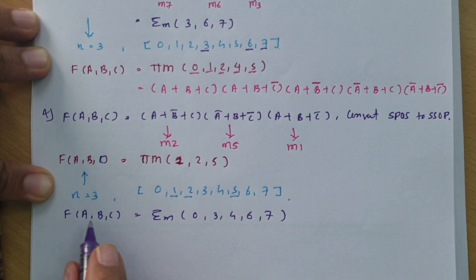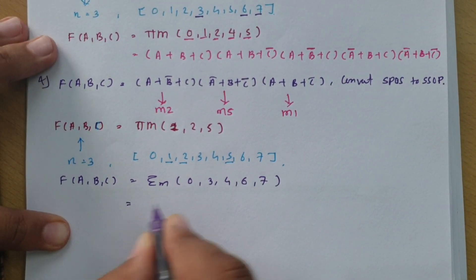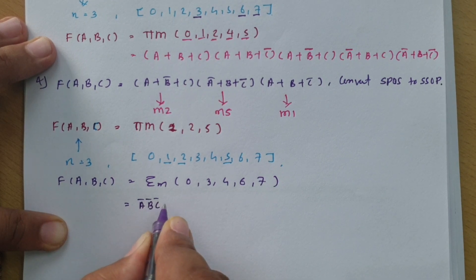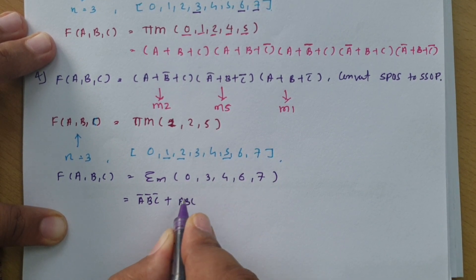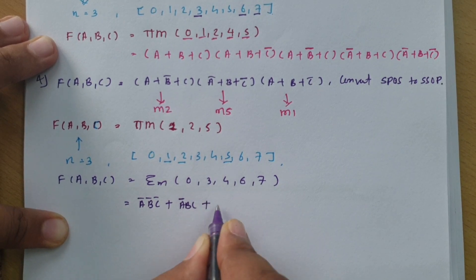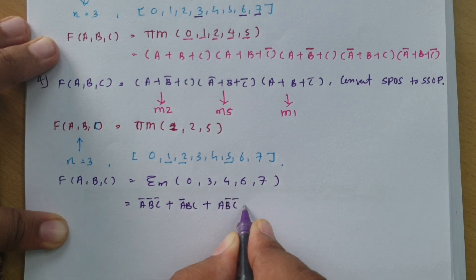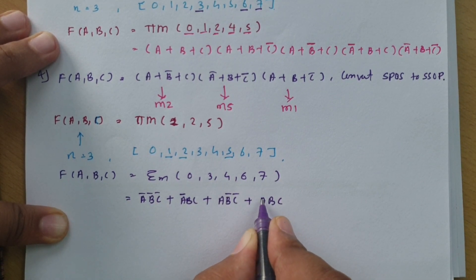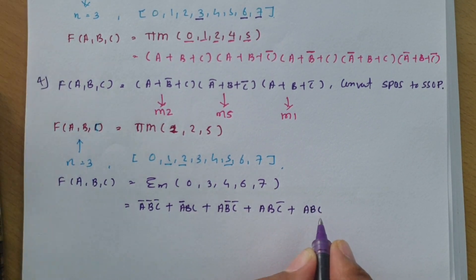Writing this in variable form: for minterm 0 (0,0,0) — A bar B bar C bar. For minterm 3 (0,1,1) — A bar B C. For minterm 4 (1,0,0) — A B bar C bar. For minterm 6 (1,1,0) — A B C bar. For minterm 7 (1,1,1) — A B C. That is how we write this answer.